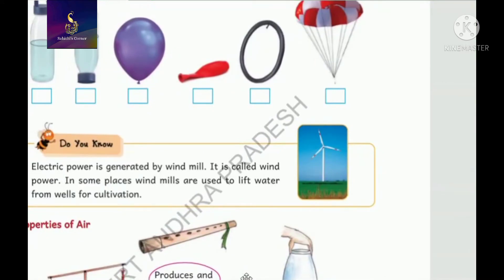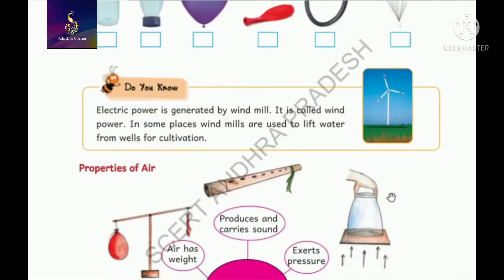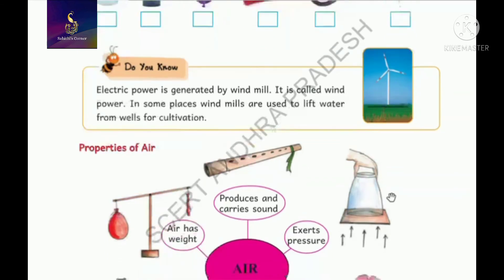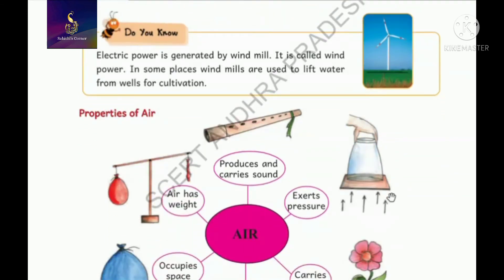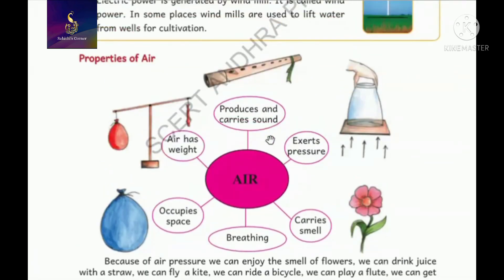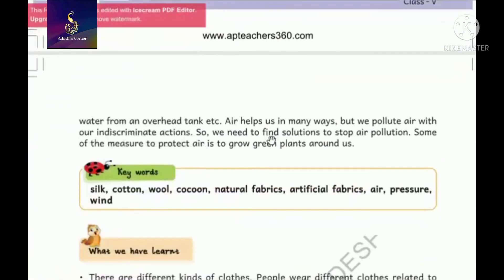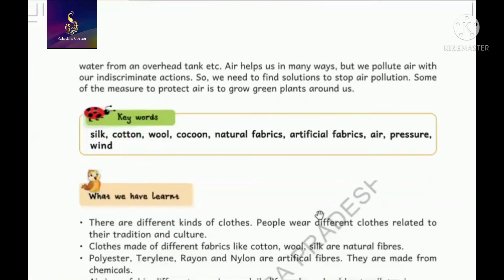From fans, electric power is generated - this is called a windmill. It is very important nowadays. We are using air to generate power. Air helps us in many ways: it produces sound, has excess pressure, carries smell, is used for breathing, occupies space, and has weight. Air has all these properties and is very useful.